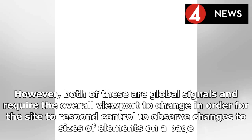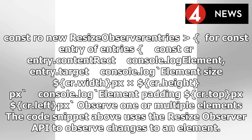The Resize Observer API allows developers to observe changes to sizes of elements on a page. For example: const ro = new ResizeObserver(entries => { for (const entry of entries) { const cr = entry.contentRect; console.log('element size:', cr.width, 'px x', cr.height, 'px'); console.log('element padding:', cr.top, 'px', cr.left, 'px'); } }); — used to observe one or multiple elements.